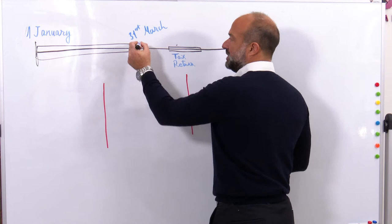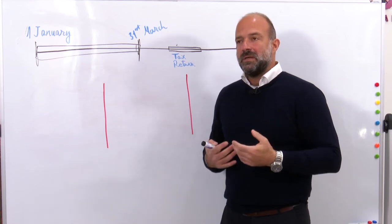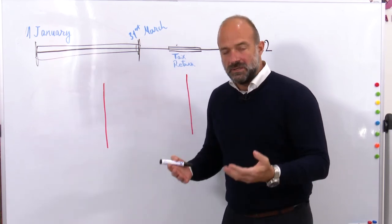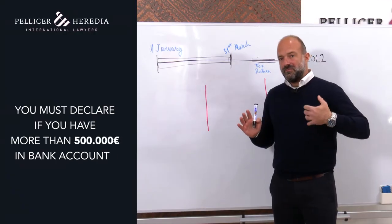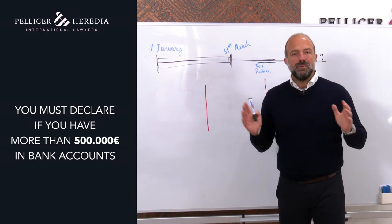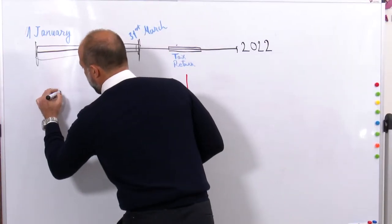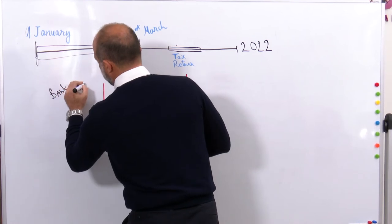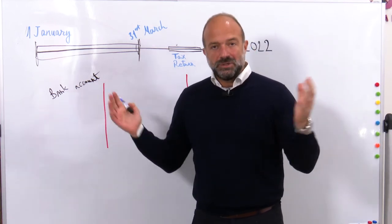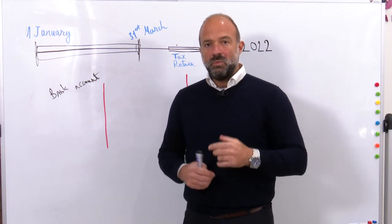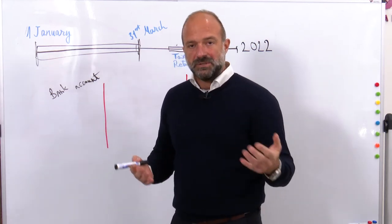The period to submit the Modelo 720 is 1st of January to 31st of March. Let me briefly explain what information needs to be included in this form. We will divide the informative declaration into three pillars, three blocks. The first block covers bank accounts — any bank accounts you have abroad that, added all together, amount to more than 50,000 euros, placing you under the obligation to declare and include details of all those accounts in this informative declaration.